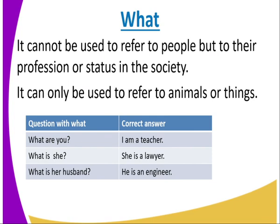Looking at 'what' as a pronoun: it cannot be used to refer to people, but it can refer to their professional status in society. It can also be used to refer to animals or things. For example: 'What are you?' — I am a teacher. 'What is she?' — she is a lawyer. 'What is his husband?' — he is an engineer. So you can see the word in the question has been replaced with a profession.